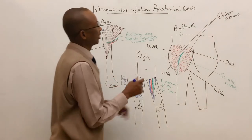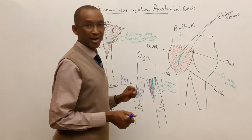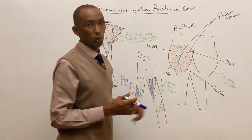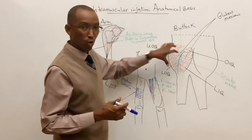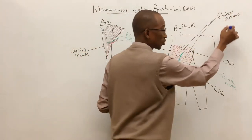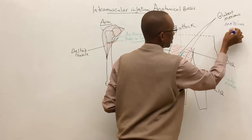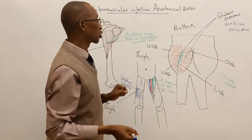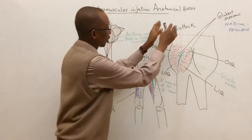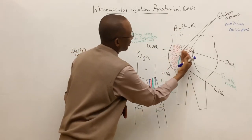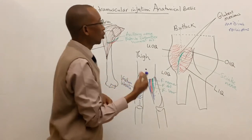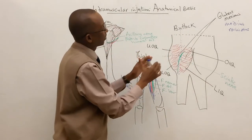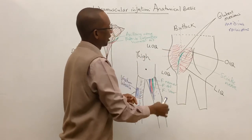The buttocks are actually the major site where doctors, nurses, and paramedics prefer to give injections, because of the large gluteal muscle mass. The gluteal muscles include gluteus maximus, gluteus medius, and gluteus minimus, with the gluteus maximus covering most of the posterior aspect of the buttocks. To identify the correct injection site, imagine a vertical line dividing the posterior buttocks into medial and lateral halves, and a horizontal line dividing it into upper and lower halves.